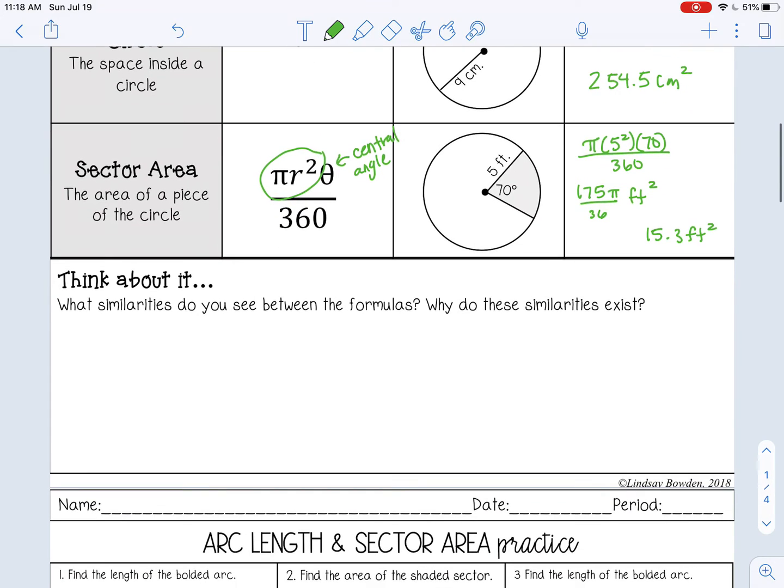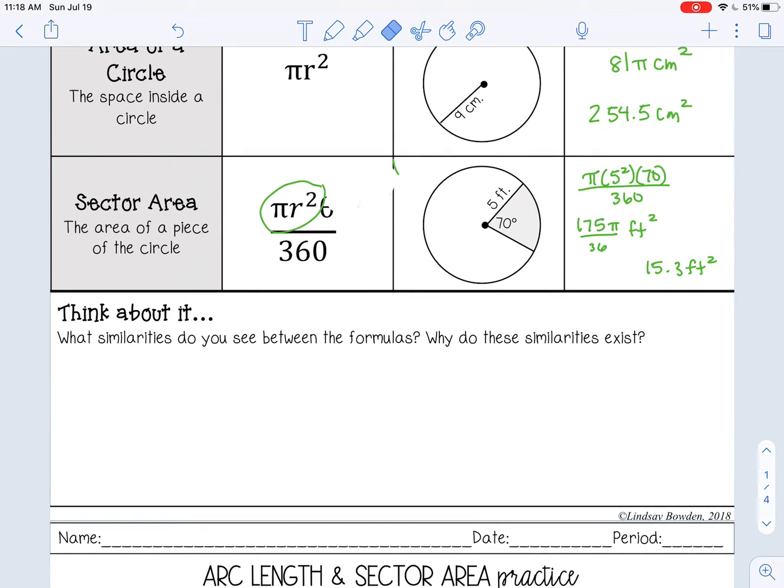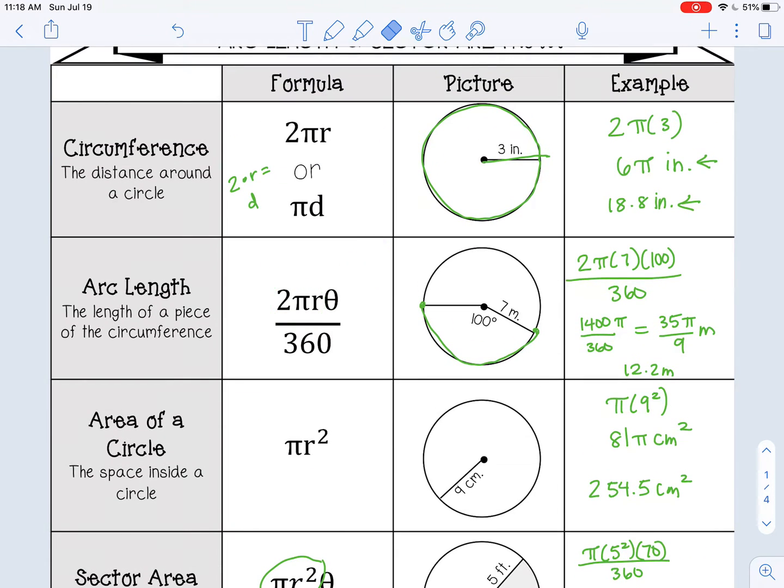Let's talk about what these formulas actually mean. Think about it. What similarities do you see in the formulas? And why do these similarities exist? Pause the video now and write down any thoughts you have about that. So we kind of already talked about this, but let's go back to our arc length formula. Within the arc length formula, you see the circumference formula 2 times π times r. And then you have this other piece, θ over 360. In fact, sometimes, depending on your formula sheet or your textbook, you may see the formula written like this: 2πr times θ over 360. Same thing. It's just separated out.